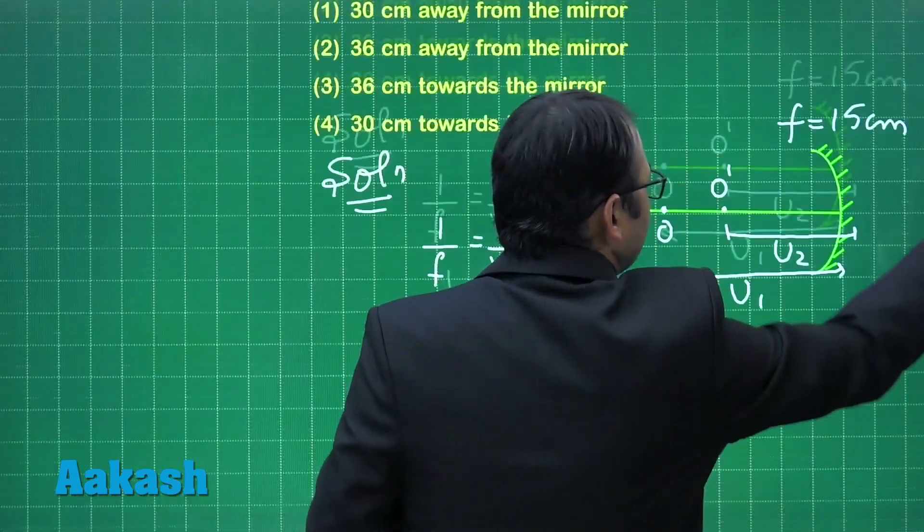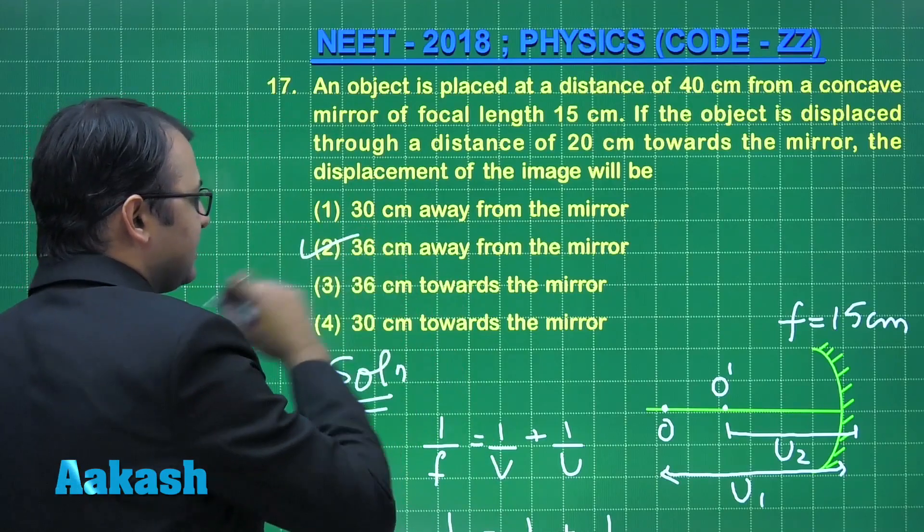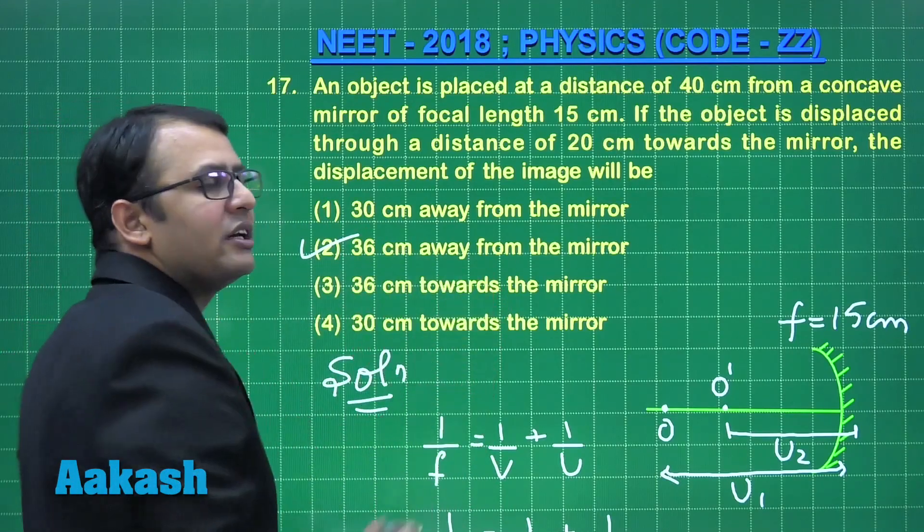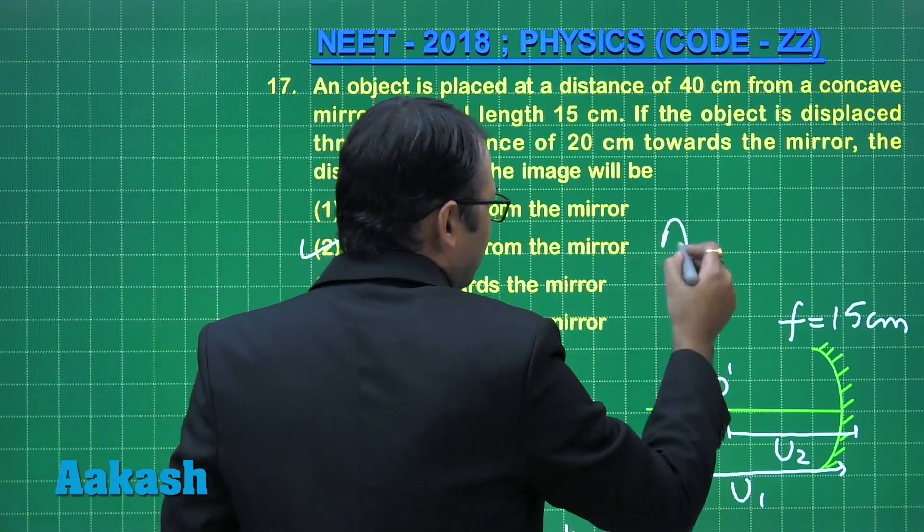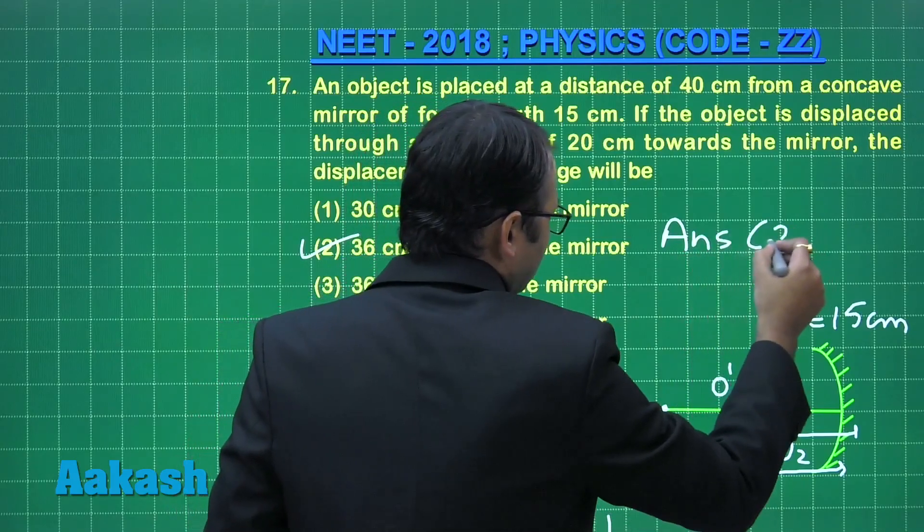Let's see what the option would be. So first no, second yes. Second is the answer. 36 cm away from the mirror. So correct option for this question would be 2.